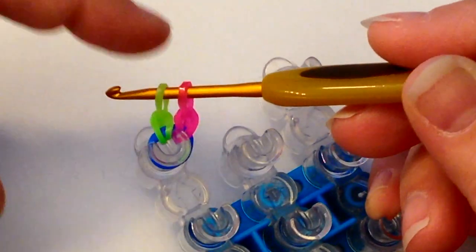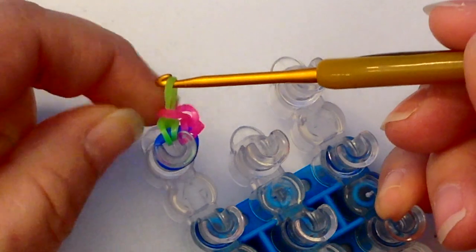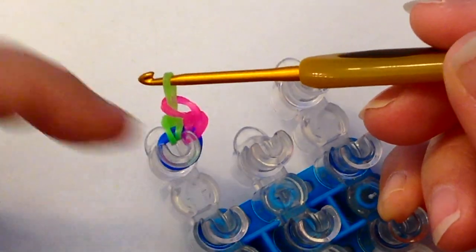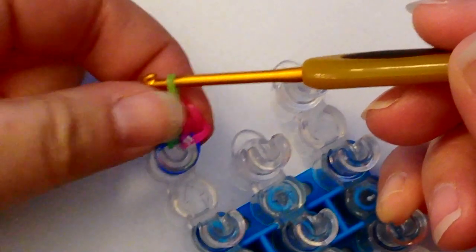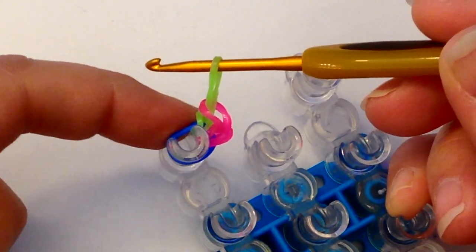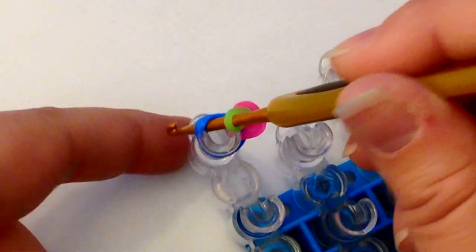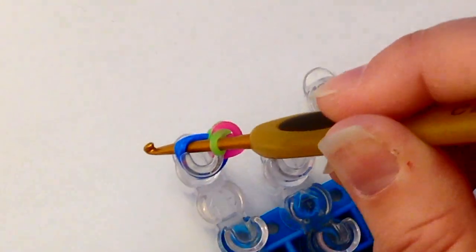Now to join these together, take the pink one up and over the green like that so that it's knotted in. Let's again move that around so that we have room at the front here, leaving this green band on, to push our hook down the center of our peg again.